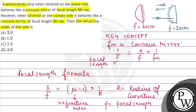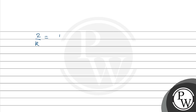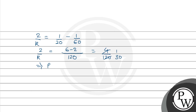Solving for 2/R: 2/R equals 1/60 minus 1/20. Taking LCM of 60, we get (3 − 1)/60 = ... let's recalculate: 1/20 minus 1/60 = (3 − 1)/60 = 2/60 = 1/30. So 2/R = 1/30, which gives R = 60 cm. We get the radius of curvature as 60 cm.